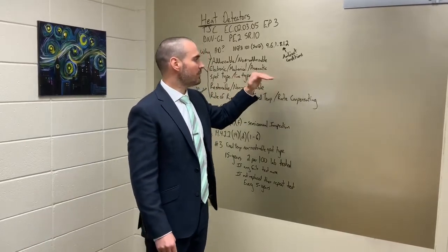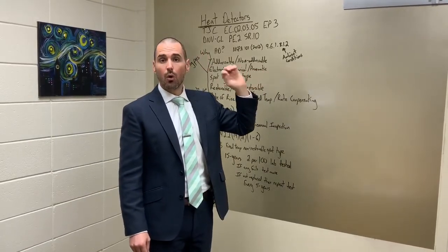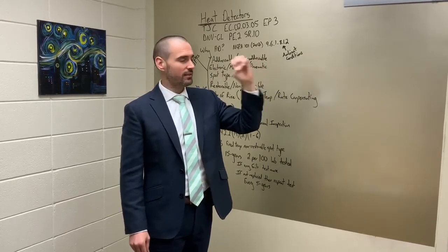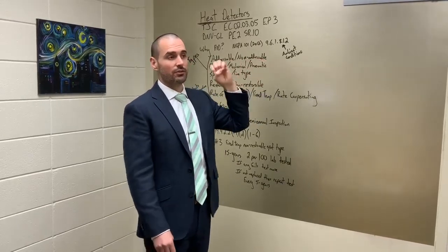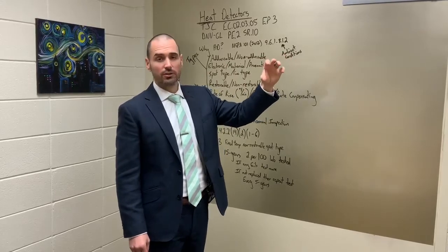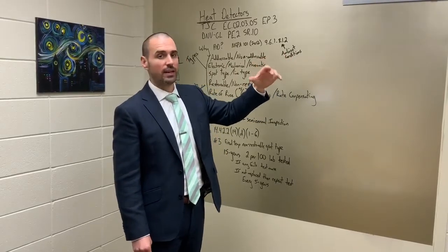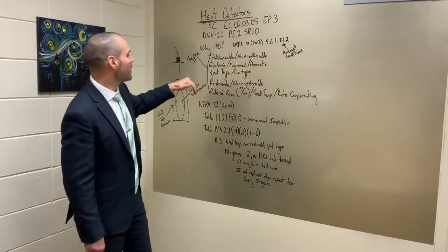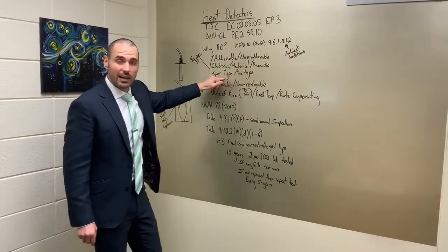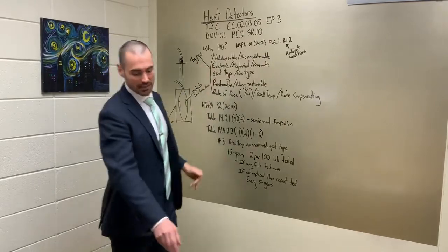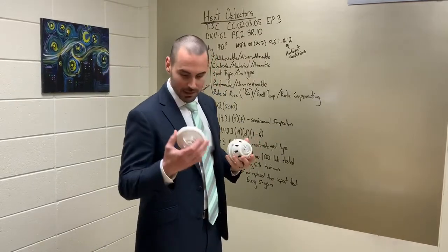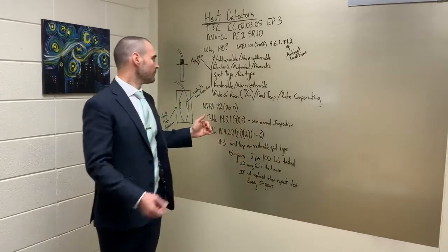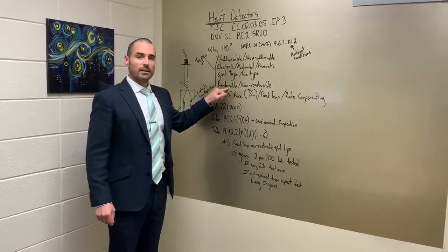We'll talk real quickly line type. There's two different kinds. There's cords that actually can sense the temperature, and then there's pneumatic tubes where the pressure differential inside those pneumatic tubes changes and it triggers an alarm. Primarily used in industrial settings. So what we see most of the time in healthcare is spot type detectors. All of these are different spot type detectors that you'll find.